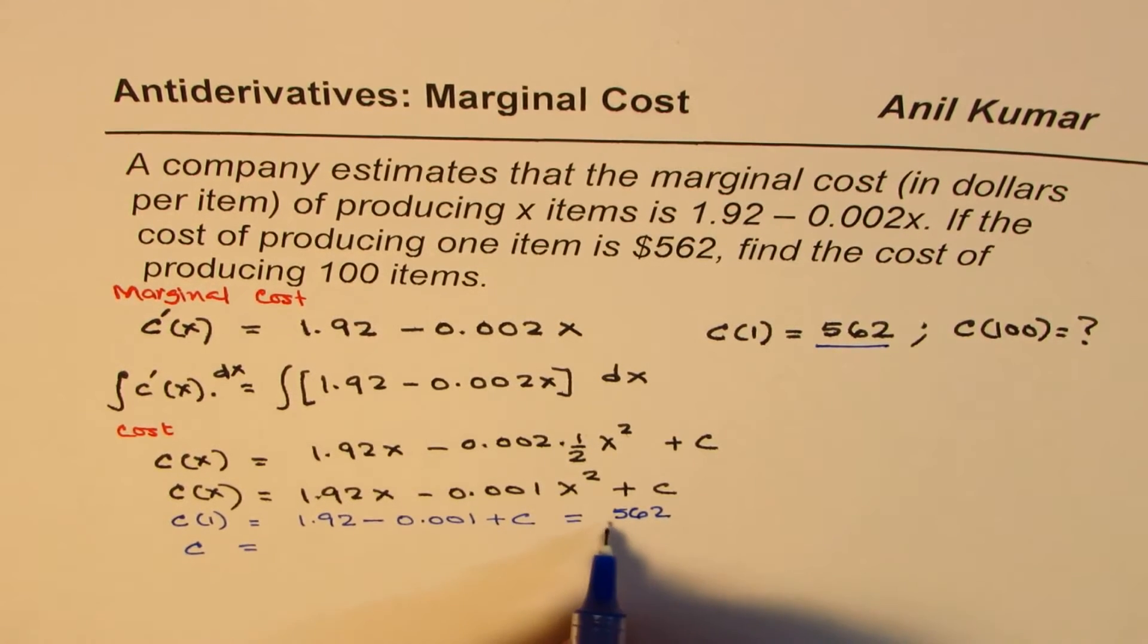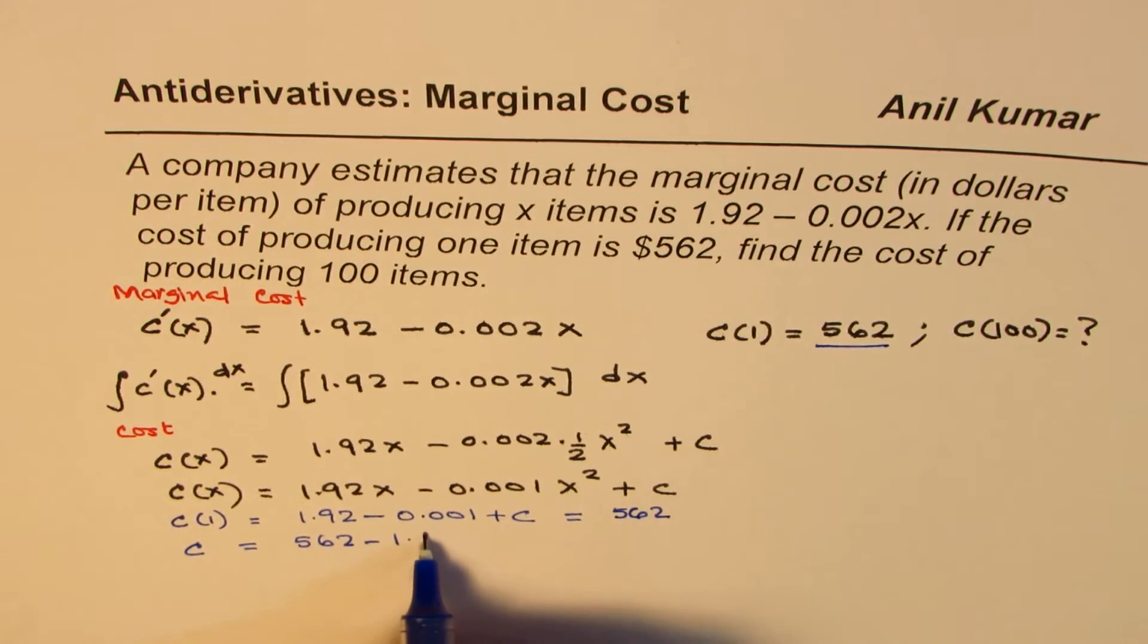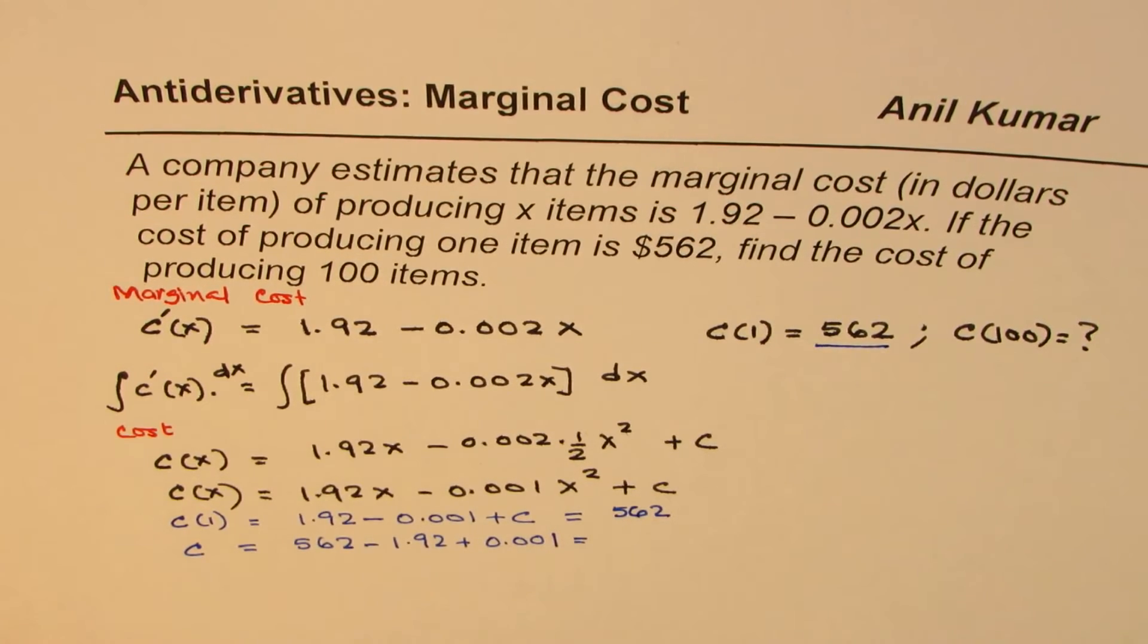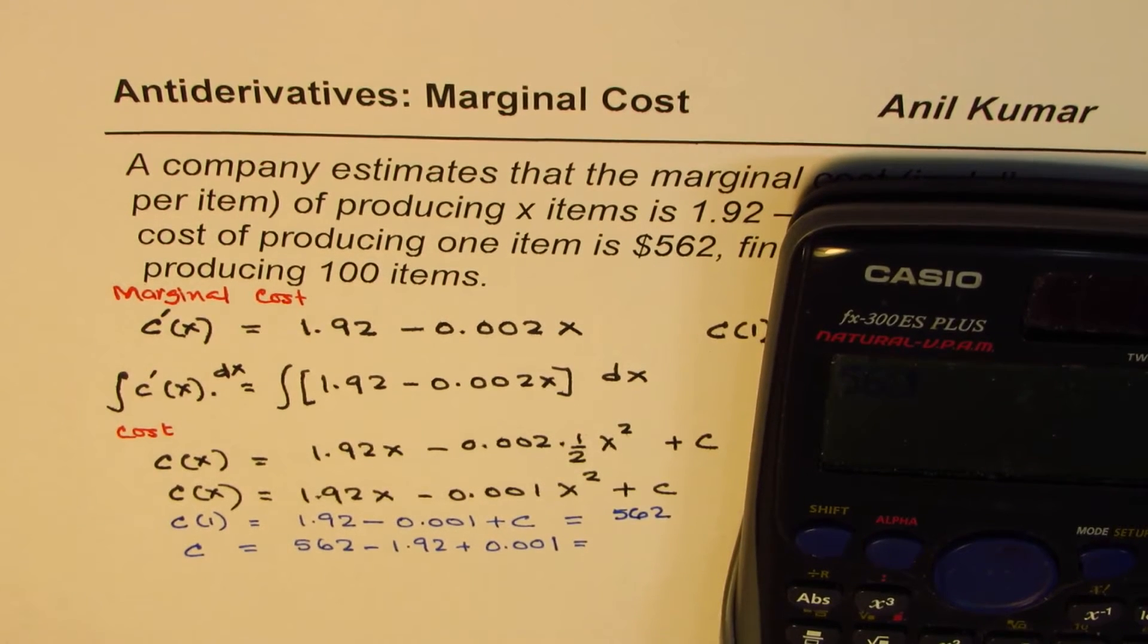So C is 562 minus 1.92 plus 0.001. We can use the calculator. So we have 562 take away 1.92 plus 0.001.